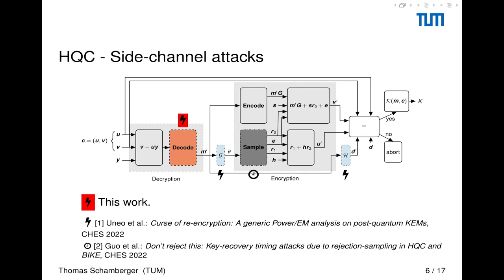And the two other works are from Uneo et al., which show an attack using this hash function here, which was published at CHES 2022, and a second attack from CHES 2022 by Guo et al., which observe that here the sampling of the random polynomials uses rejection sampling, and there is a timing side channel in this rejection sampler.